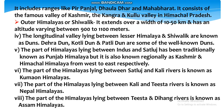Third: the Outer Himalayas or Siwalik. It extends over a width of 10 to 50 km and has an altitude varying between 900 to 1100 metres. Bāhrī Himālayaz yā Sivālik; iskī caurāī 10 se 50 km tathā ūṃcāī 900 se 1100 metre ke bīc hai. The longitudinal valleys between the Lesser Himalayas and the Siwalik are known as Duns. Dehra Dun, Kotli Dun and Patli Dun are some of the well-known Duns.